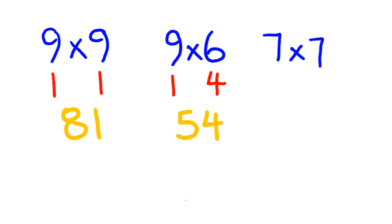How are you going so far? Probably good, I hope. This is 3 under 10, this is 3 under 10. 7 take away 3 is 4, then 3 times 3 is 9, giving us 49. How easy is that for learning your times tables?